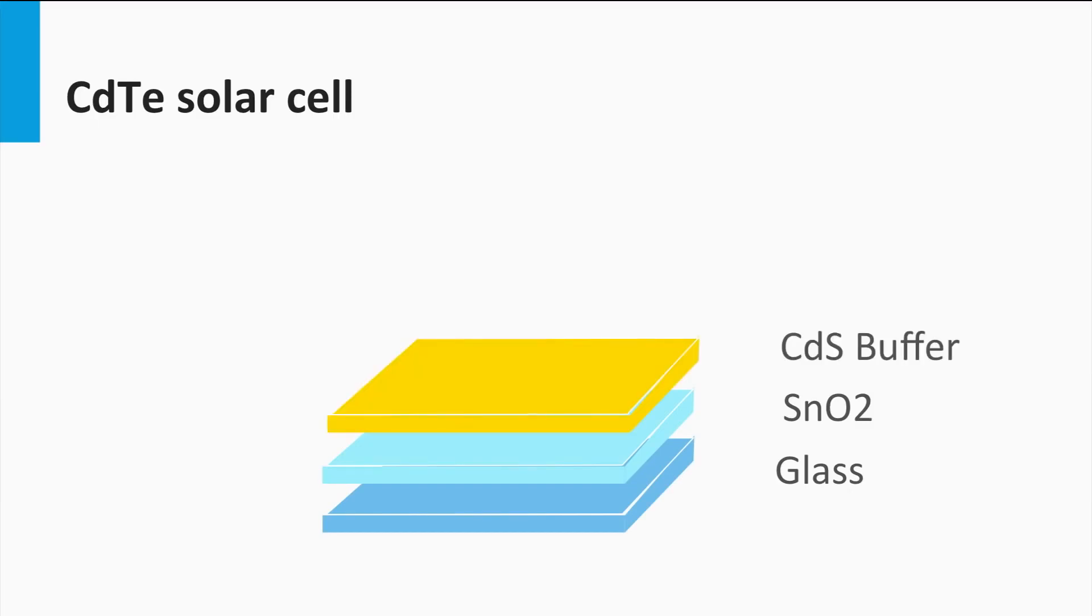On top of that, the N-layer is deposited, which is a cadmium sulfide layer, similar to the N-buffer layer in CIGS solar cells.